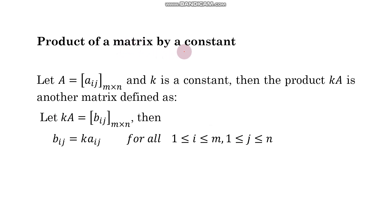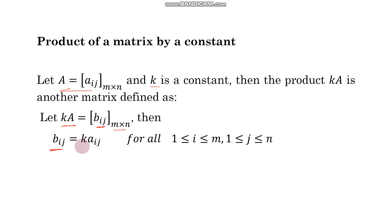Now, product of a matrix by a constant. Whenever we multiply a matrix with a constant, every element is multiplied by that constant. So if A equals aij of order m by n and k is a constant, then kA is another matrix bij of order m by n, where bij equals k times aij for all i and j in the range.